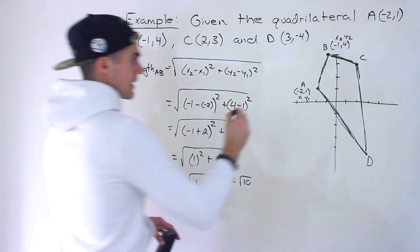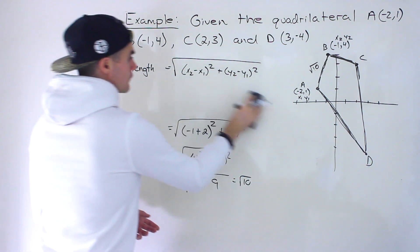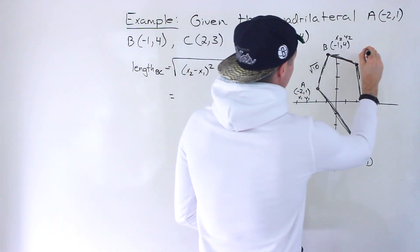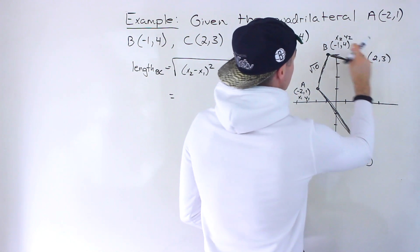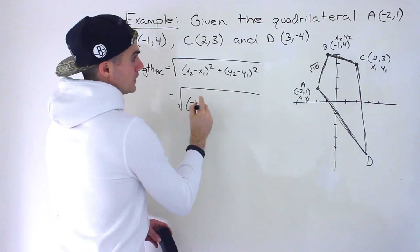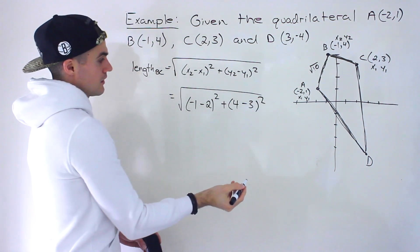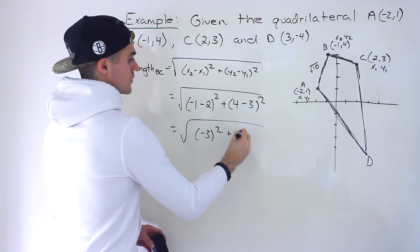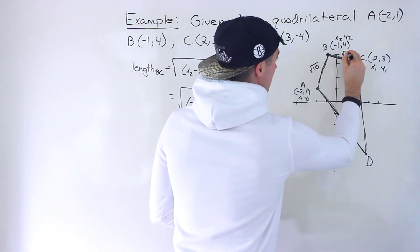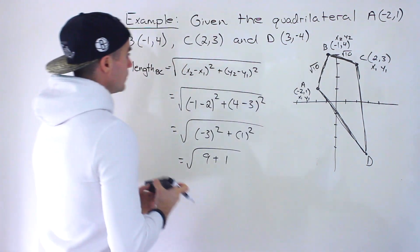Now let's find the length of BC. With C as (x1, y1) = (2, 3) and B as (x2, y2) = (-1, 4), we get: square root of (-1 - 2)² + (4 - 3)², which is √((-3)² + 1²) = √(9 + 1) = √10. As expected, both AB and BC have the same length.